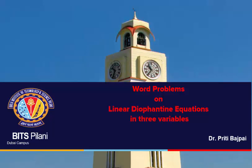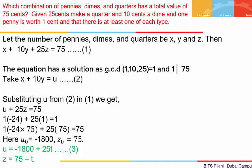Hi everyone, let's do some word problems on linear Diophantine equations in three variables. The first problem states: which combination of pennies, dimes and quarters has a total value of 75 cents? We know that 25 cents make a quarter, 10 cents make a dime and 1 penny equals 1 cent. We are also given that there is at least one of each type.